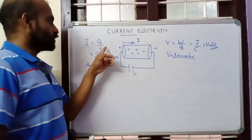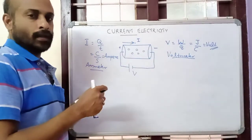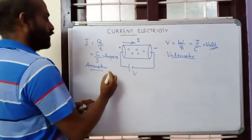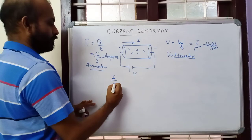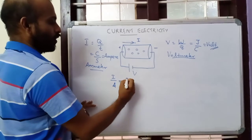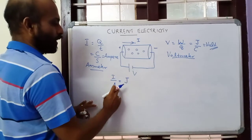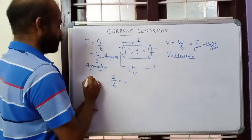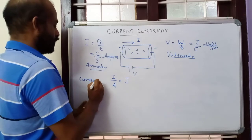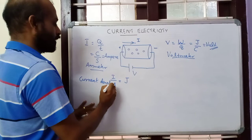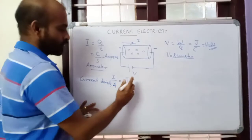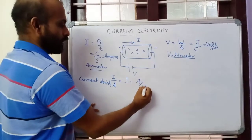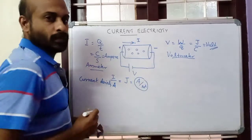Current is the charge divided by time, flowing normal to the area cross section of the conductor. If you divide current by area, it has another name called current density. Current divided by area is represented by symbol J — J equals I by A — called current density. The SI unit of current is ampere, area has SI unit meter squared, so ampere per meter squared is the SI unit of current density.